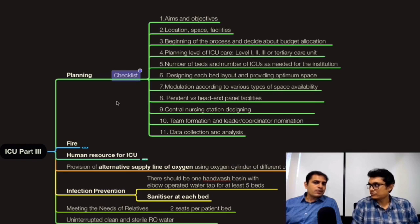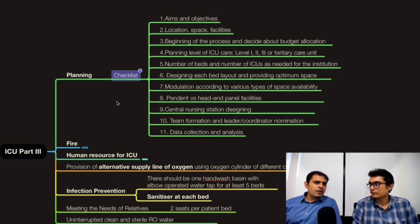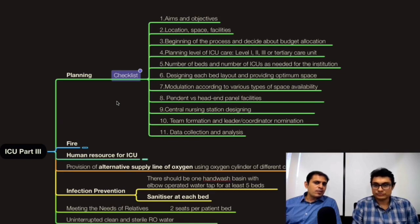You should know about the budget — how much you are going to invest and resource allocation should be according to that. Then consider the levels of ICU: level one is basic ward, second is HDU, third is tertiary care unit. Consider the number of beds — if you make more than 12 beds in one ICU it is difficult to manage. For each bed, ensure adequate space because a very cramped ICU will be more prone to infections and there will be a lot of cross infections.